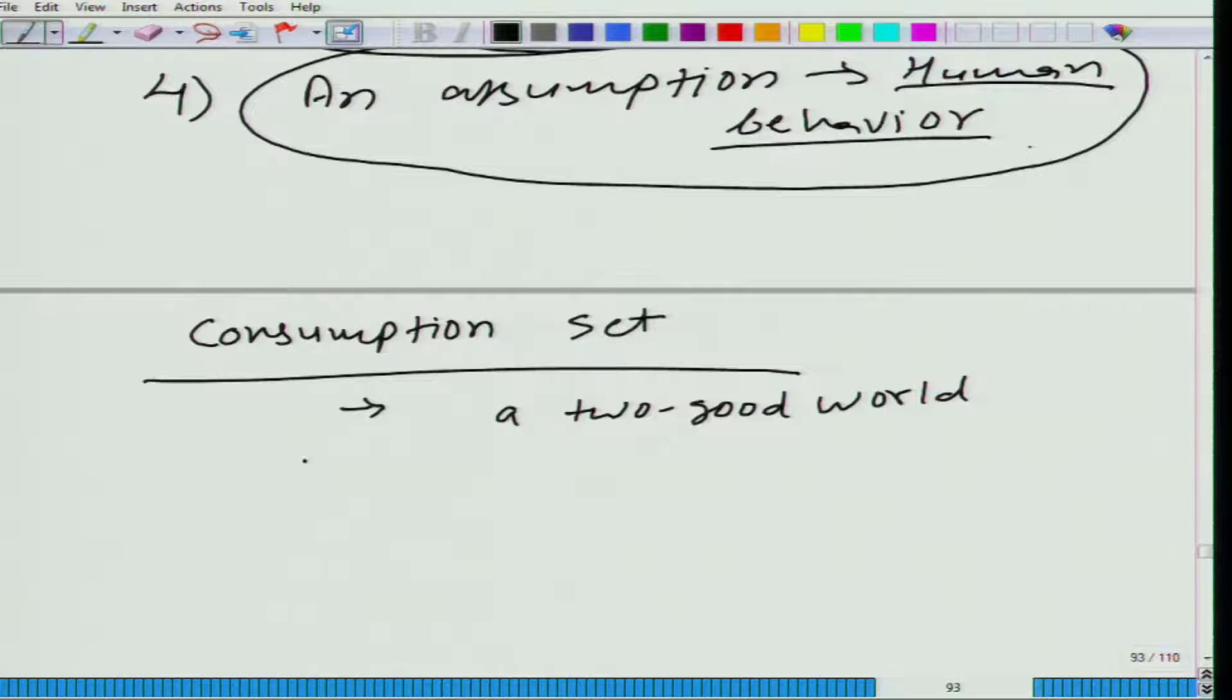So a few things I want to talk about this consumption set, and I will start with a two good world. Of course, we can describe it on this paper. Let's say on x axis we give amount of good one, and on y axis we give amount of good two. Can we have this zone? Let me, can we have this is say zone 4. This is 1, this is 2, this is 3. Can we have zone 2, 3, and 4 in our consumption bundle?